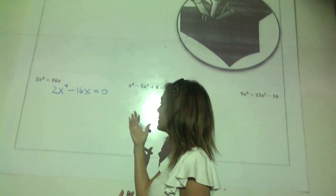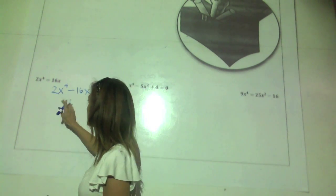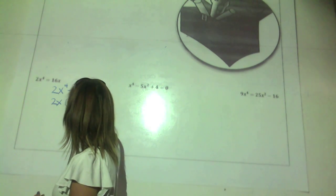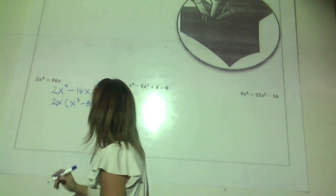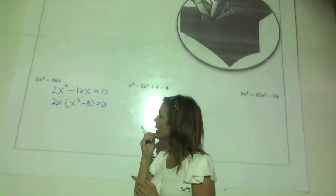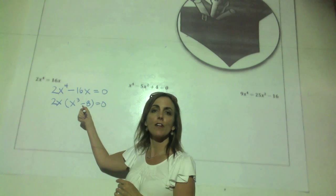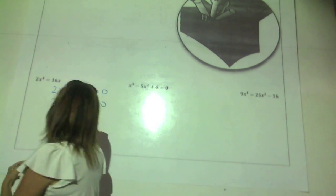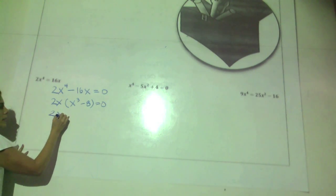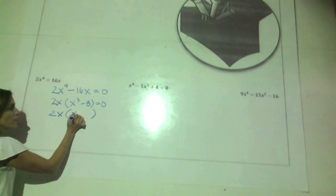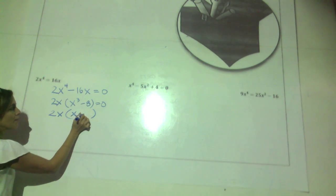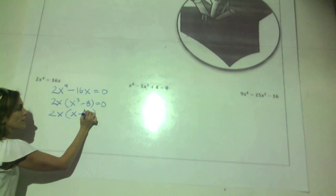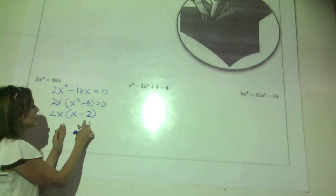Now we have something we recognize as a difference of squares, which factors a little further. So 3x squared times x plus 4 times x minus 4 equals zero — a fully factored polynomial. Setting each factor equal to zero, we get x equals zero, x equals negative 4, and x equals positive 4. Our solution set is zero, negative 4, and positive 4.